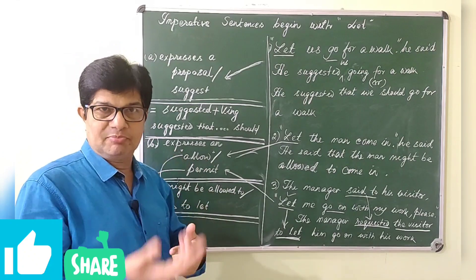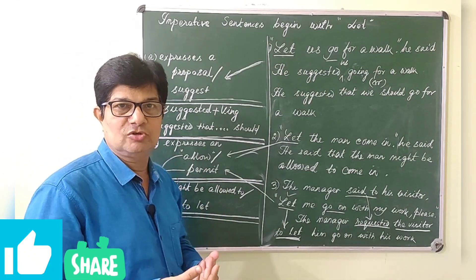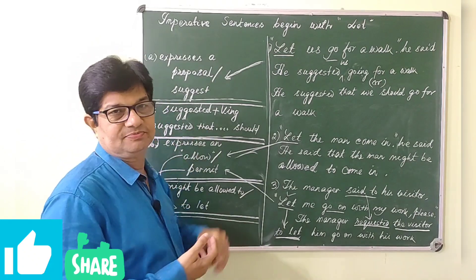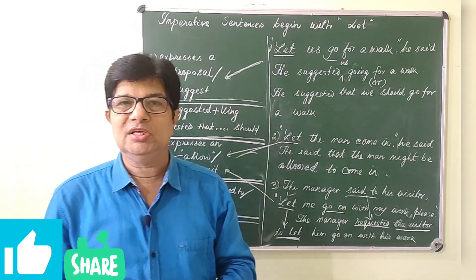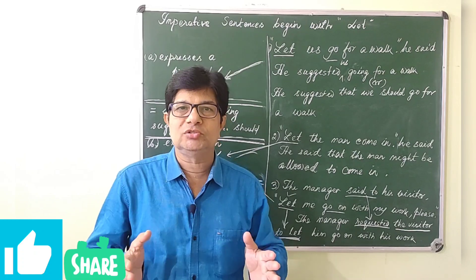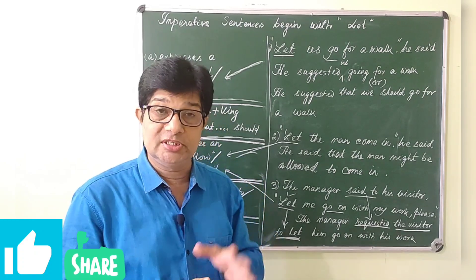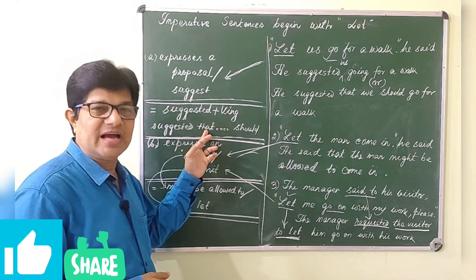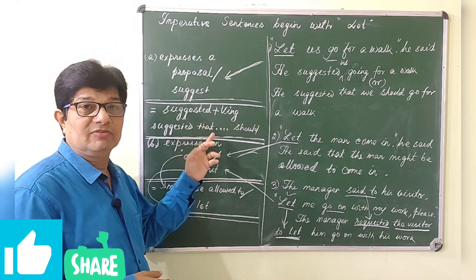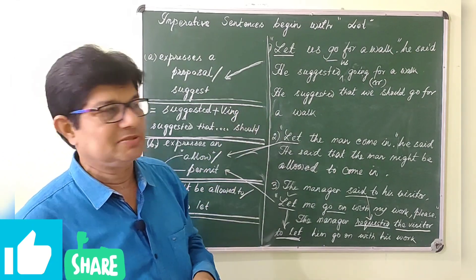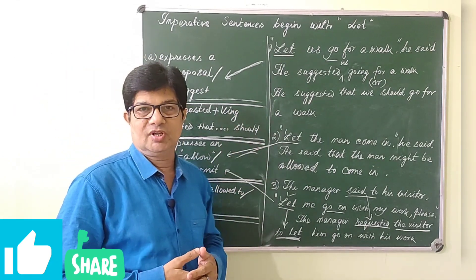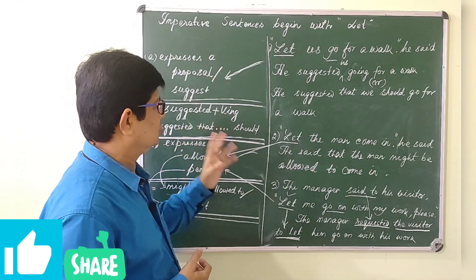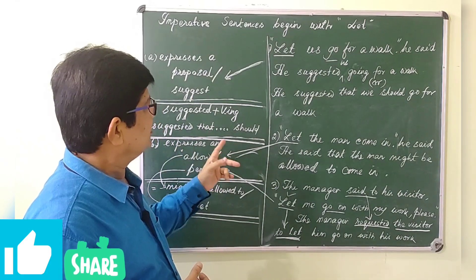There is another formula: suggested that. Normally, imperative sentences do not take conjunctions. But here, when it expresses a suggestion, you can write that as a conjunction. After that, the subject comes from the reported speech part, then should. So, suggested that subject should. We will learn this example here.